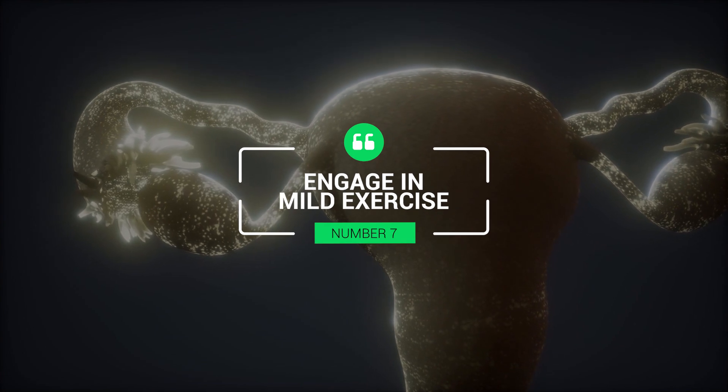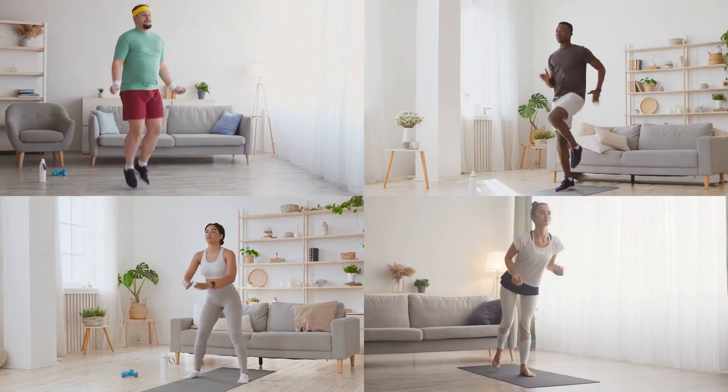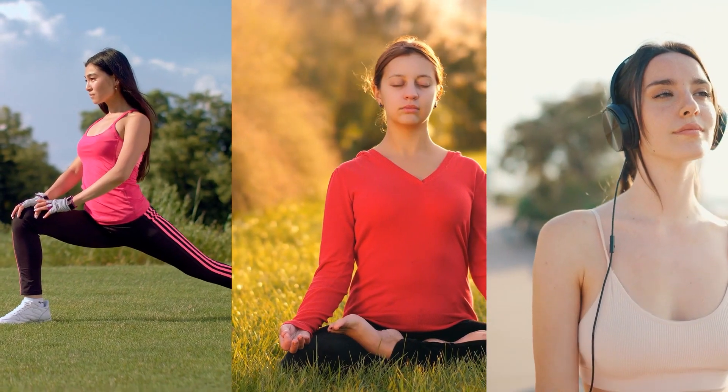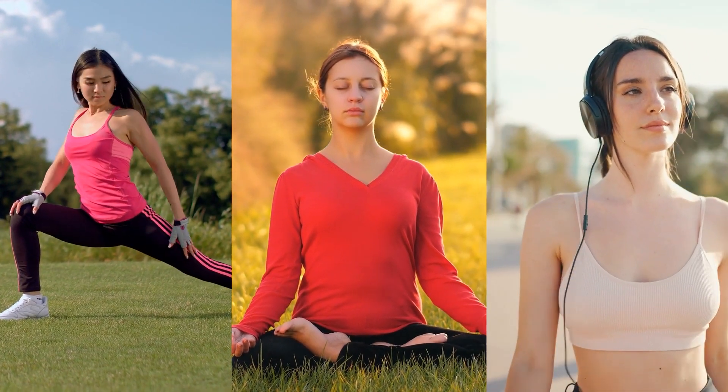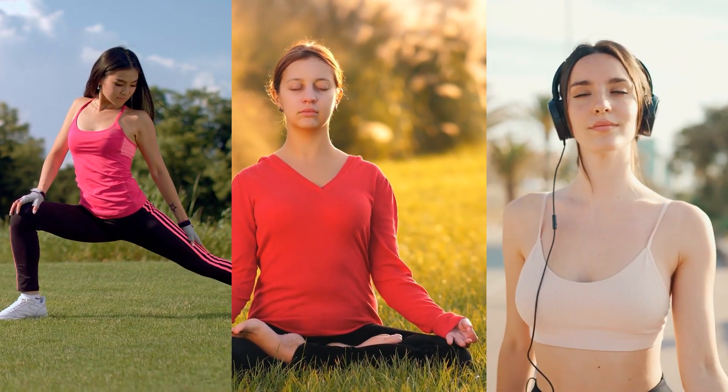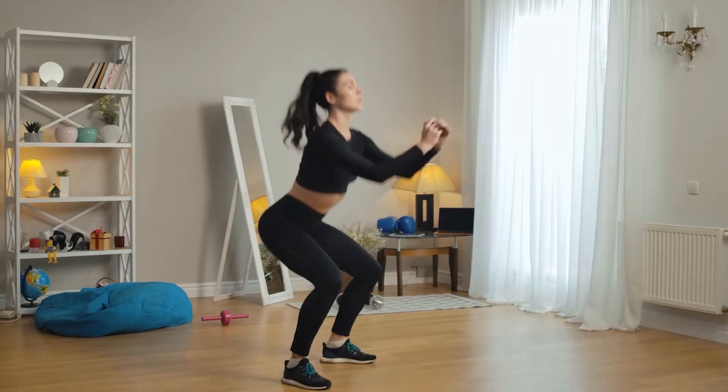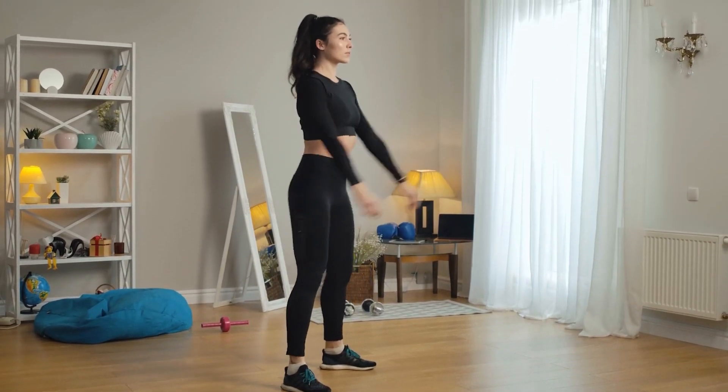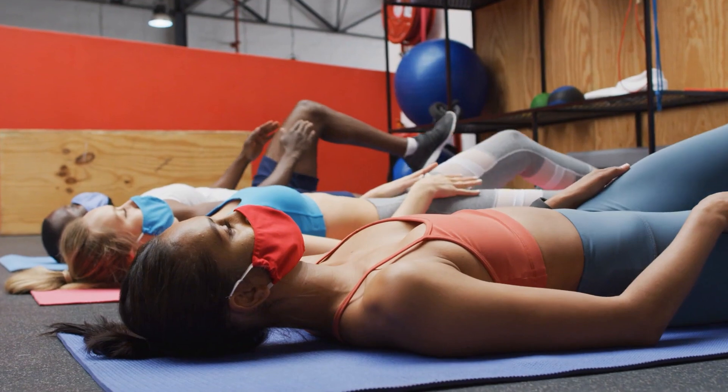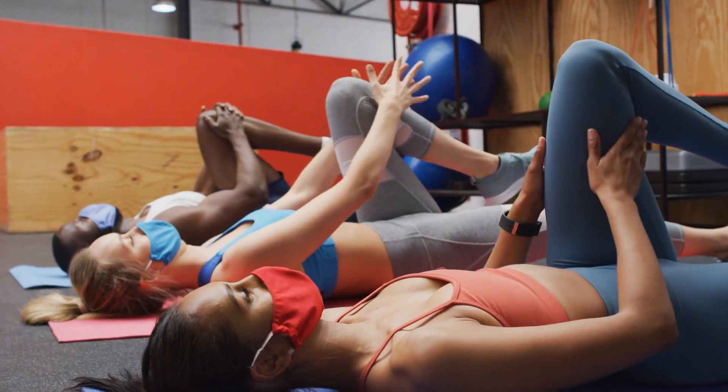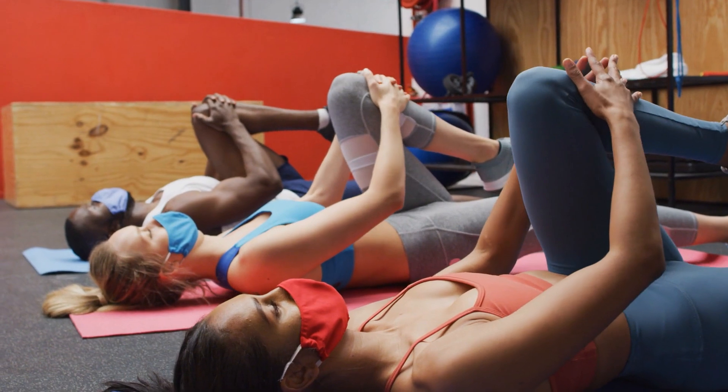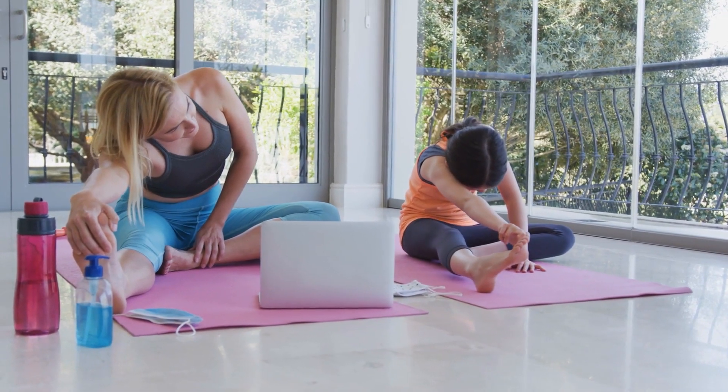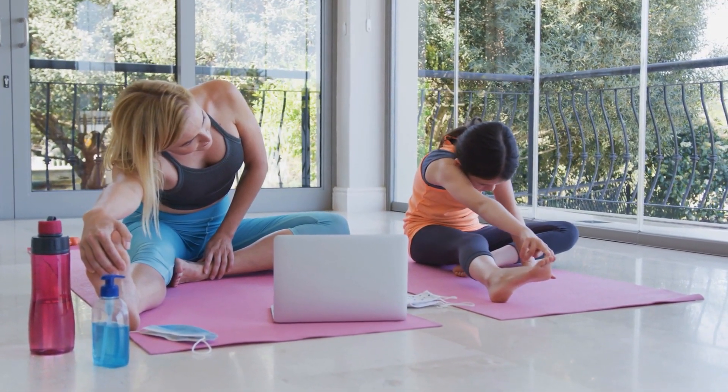7. Engage in mild exercise. Exercise is one of the most effective ways to increase progesterone naturally. Physical activities like walking, stretching, yoga, or Pilates can help reduce stress levels, a critical factor for increasing progesterone. Exercising for about 30 minutes every day can help regulate your menstrual cycle and reduce symptoms associated with PMS. However, ensure not to overdo it because excessive exercise can lead to cortisol production, which can decrease progesterone levels. Therefore, engage in mild to moderate intensity exercise at least three times weekly for optimal results.